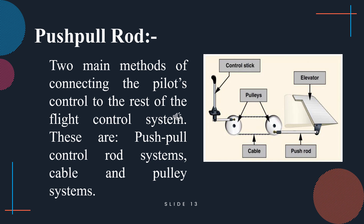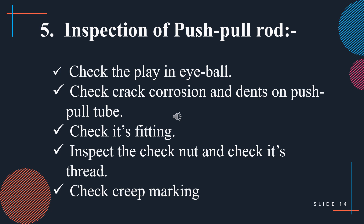In the push-pull rod system, metal push-pull rods are used as a substitute for cables. To inspect a push-pull rod, check the play in the eyebolt, check for cracks, corrosion, and dents on the push-pull tube, check its fittings, inspect the check nut and threads, and check the creep markings.